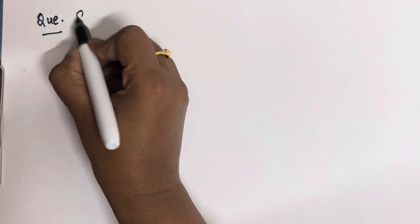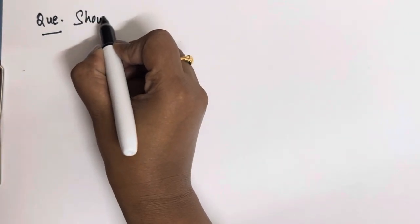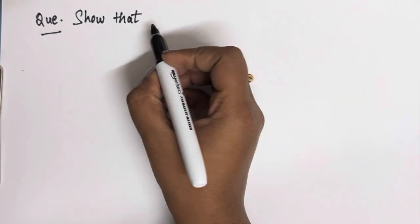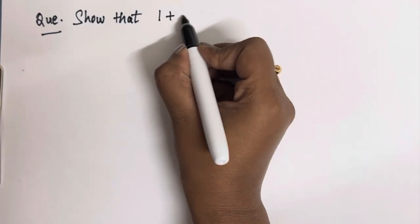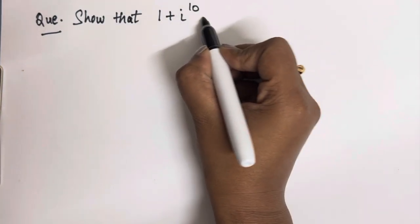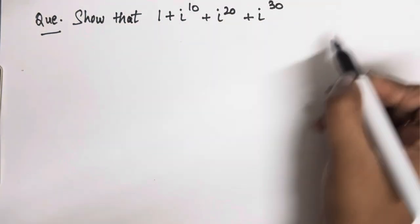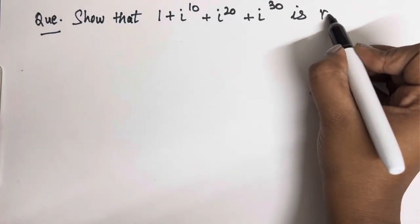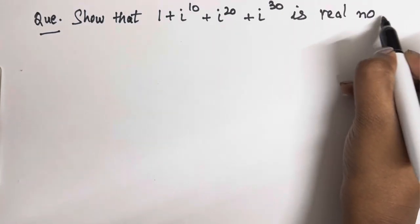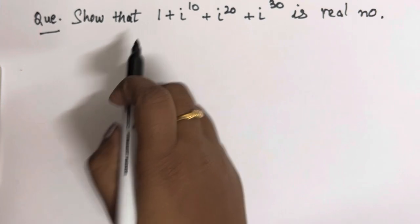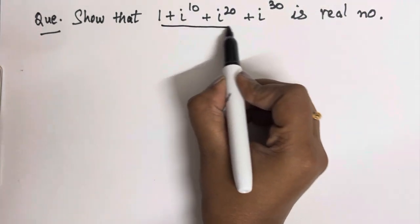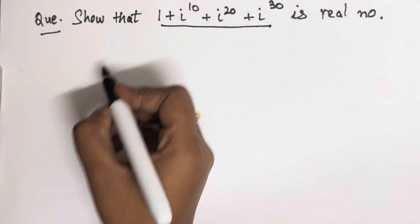So now we will start with the first question, which is to show that iota to the power 30 is a real number. We have to show that this is a real number, so we will start solving this.